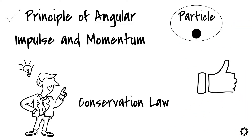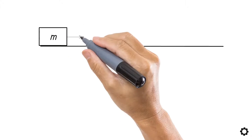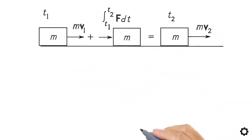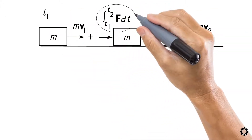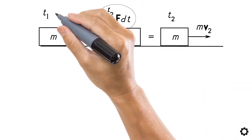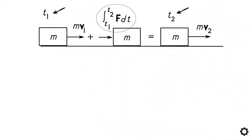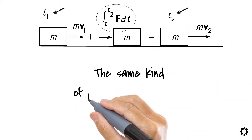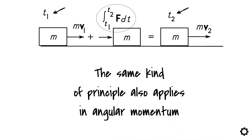In the previous videos, we learned that a particle or an object can gain linear momentum because of the applied external force which is acting during a certain time interval. Now, the same kind of principle also applies in angular momentum.